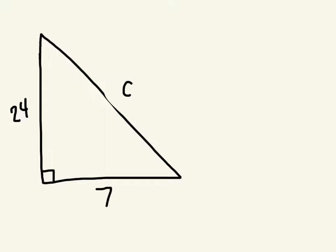So I'm going to write my formula first. A squared plus B squared equals C squared.